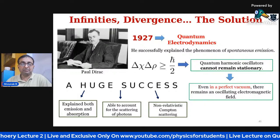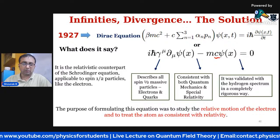Dirac's theory explained both the emission and absorption of radiation from atoms by applying what is called second-order perturbation theory. It was also able to account for the scattering of photons, resonance fluorescence, and the non-relativistic Compton effect. Nevertheless, the application of higher-order perturbation theory was a problem, carrying a lot of infinities.